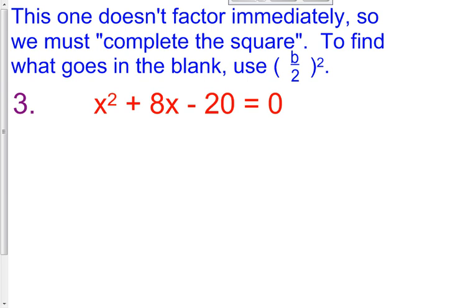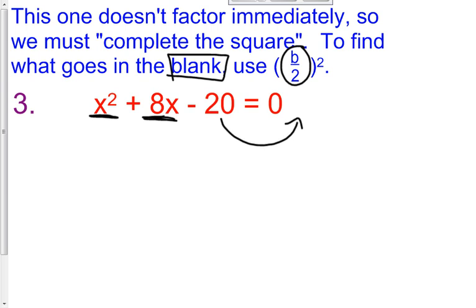In order to complete the square, we have to find what goes in the blank. To find what goes in the blank, we take b divided by 2 and that quantity squared. This might not make much sense right now, but after we do a few examples it will. In order to complete the square, I have to have x squared and x on the left side all by itself, and my constant term goes on the right side. That is the first step.